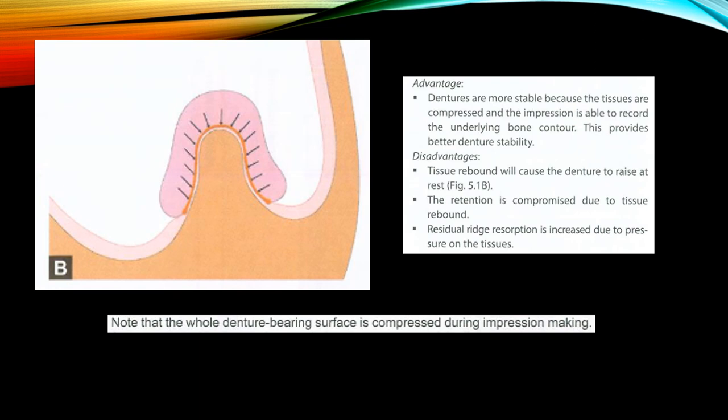In the mucocompressive technique, the whole denture-bearing surface is compressed during impression making. The advantage is that dentures are more stable because the tissues are compressed and the impression is able to record underlying bone contour, providing better denture stability. The disadvantages are that tissue rebound will cause danger at rest condition, retention is compromised due to tissue rebound, and residual resorption is increased due to pressure applied to the tissues.